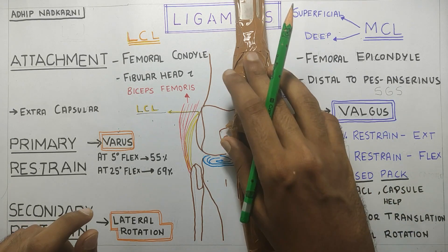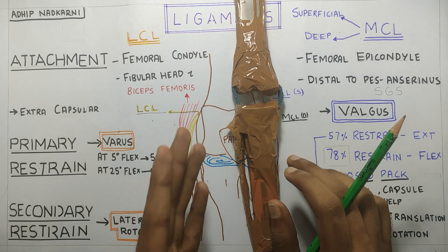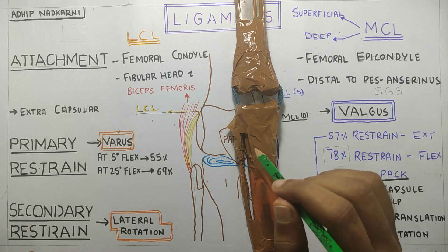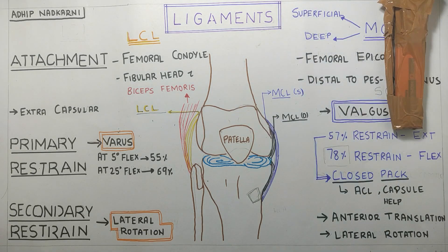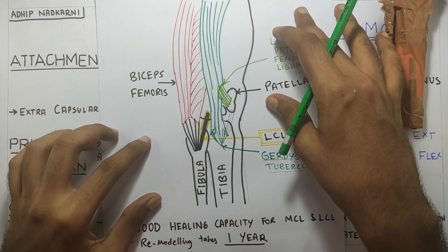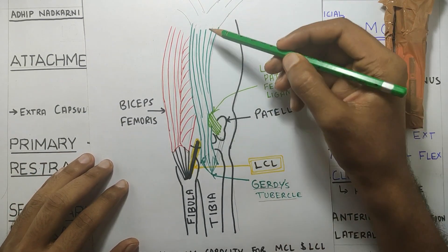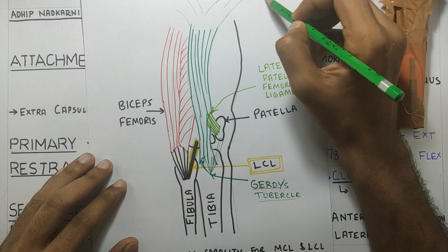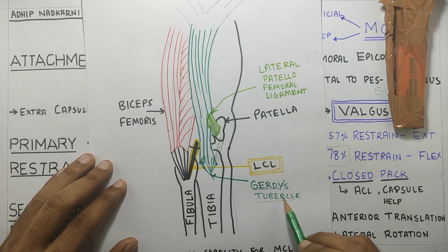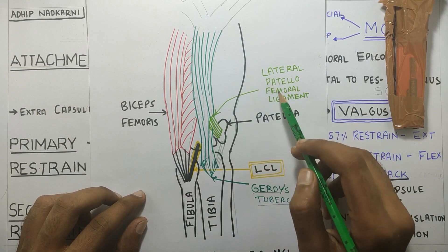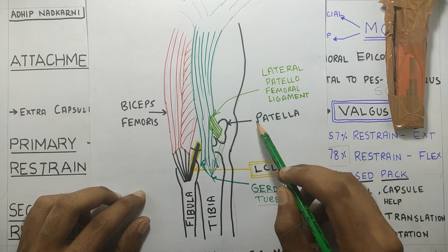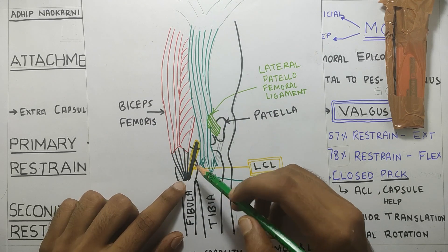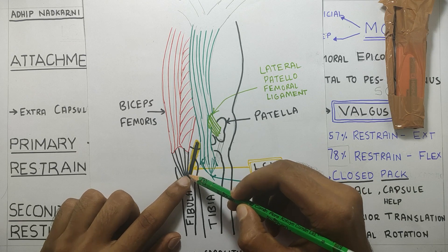A diagram was drawn to clarify the attachments on the lateral side of the knee and to show how the IT band influences the movement of the patella in the patellar groove. The IT band, shown in green, starts from gluteus medius and tensor fascia lata and attaches to Gerdy's tubercle. On its way it has an attachment to the lateral patellofemoral ligament, which attaches to the patella. Slightly posteriorly there is the biceps femoris attaching to the fibula, and the LCL ligament also attaches to the fibula and the femur.